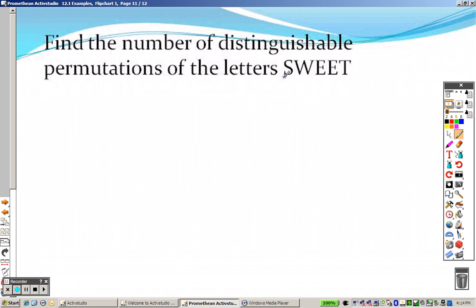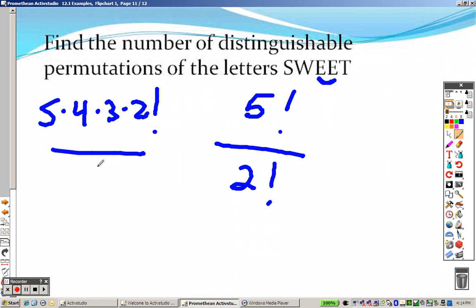Sweet. There's 1, 2, 3, 4, 5 letters. And how many letters are repeated? These two right here. So it's 2 factorial because they're repeated. So this is 5 times 4 times 3 times 2 factorial over 2 factorial. And they cancel out. So 5 times 4 is 20. 20 times 3 is 60. So there's your answer. 60.